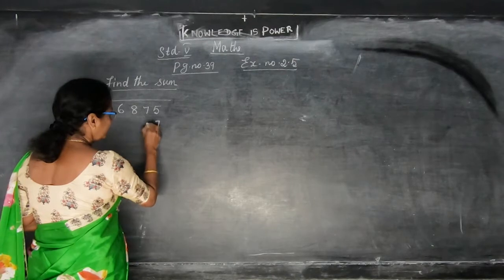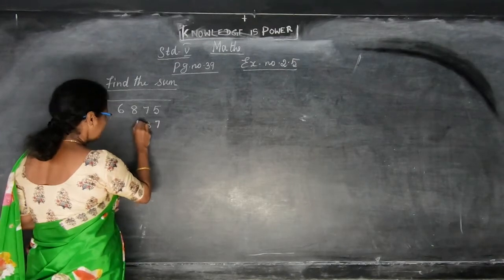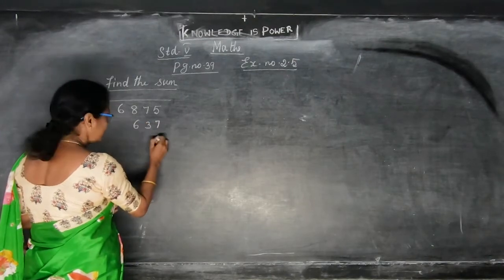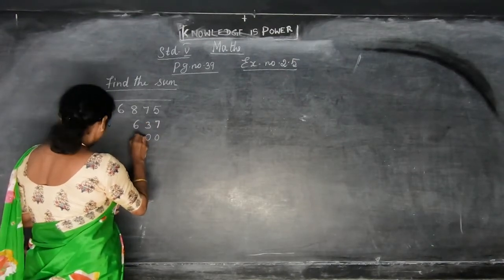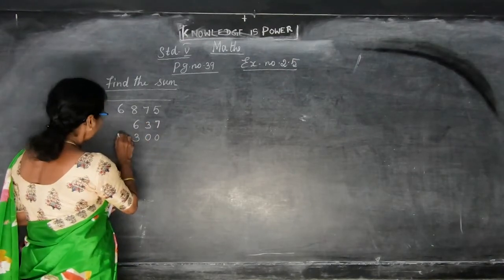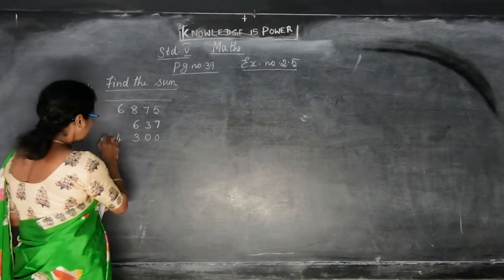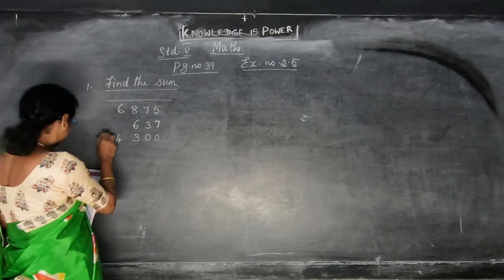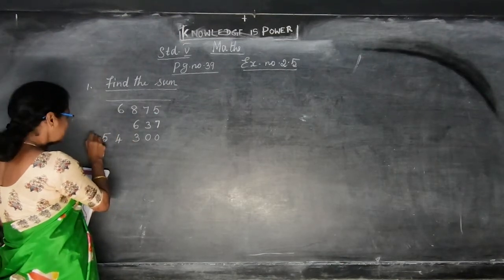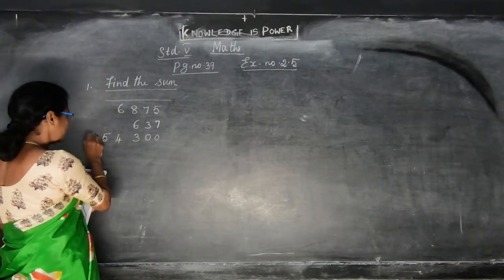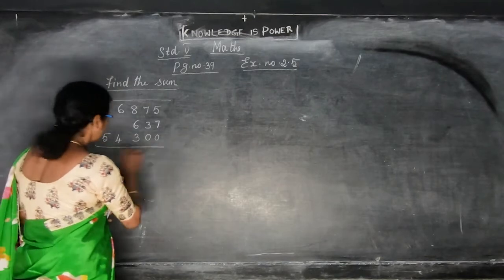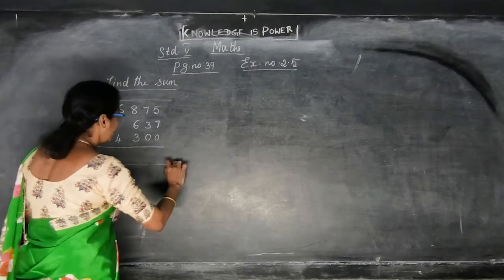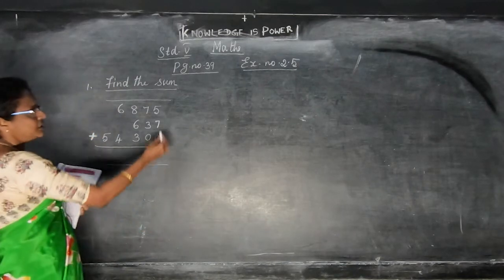That is from the units place to the thousandths place. Now: 7, 3, 6, 0, 0, 3, 4 and 5. So for addition, put the plus sign. Now you add all the numbers.